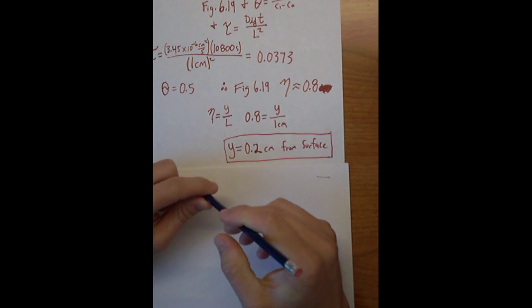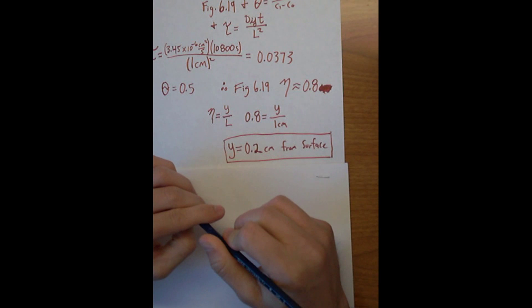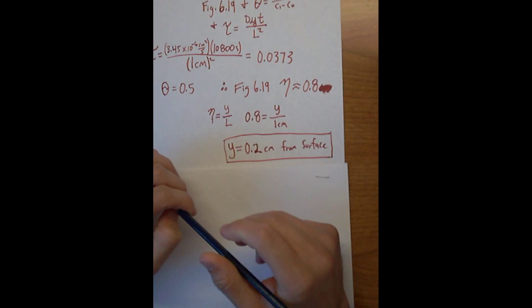So overall in this problem, in part A and B, we were able to use the semi-infinite approximation because it met the criteria of a really short time period of diffusion. Whereas in part C, the time was increased and it did not meet the criteria, and we just used the solution for unsteady diffusion in a rectangular coordinate system.